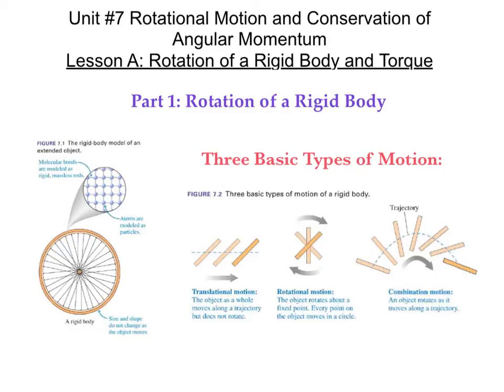Here we go with rotational motion and conservation of angular momentum. Previously, we studied circular motion, where we were concerned with a single particle moving around a circular path. Now we're going to extend that to focus on rotating objects, such as wheels, axles, and spinning tops. Objects whose shape does not change as they rotate are called rigid bodies.